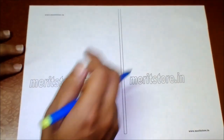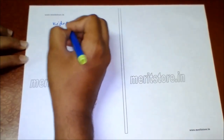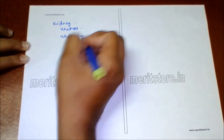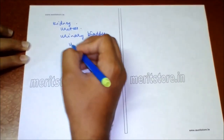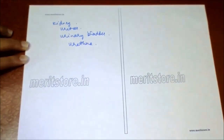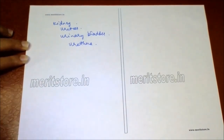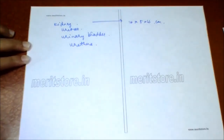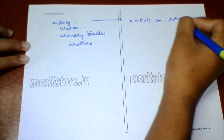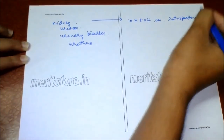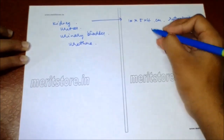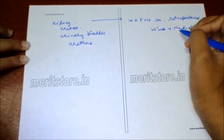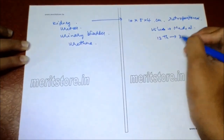The human excretory system consists of a pair of kidneys, a pair of ureters, a single urinary bladder, and urethra (in males) or vestibule (in females). The kidney is a dark-colored bean-shaped organ measuring 10×5×4 cm, retroperitoneal, covered by peritoneum on one side. The hilum is a notch on the medial surface. The right kidney is slightly lower than the left, positioned from the 12th thoracic to 3rd lumbar vertebra.